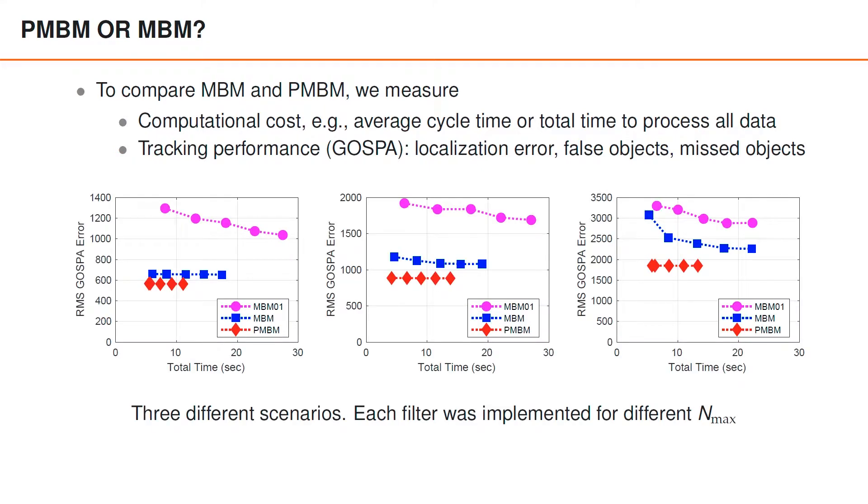So here we can see some results from three different scenarios, where we compare the performance for PMBM, MBM, and MBM01. And note that in each scenario, each tracking filter was used for different values of the maximum number of hypotheses. And as you can see, PMBM filters generally have lowest computational costs, and tracking performance is often better for PMBM filters. This is especially true in complicated scenarios. So hence, we recommend using PMBM filters.